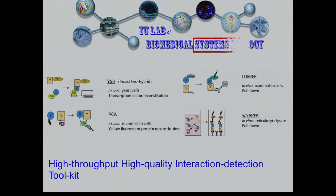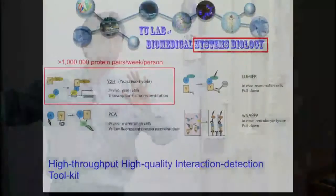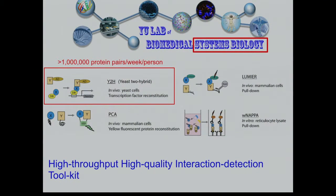My lab is a systems biology lab, although I'm in the biostatistics department at Cornell. We do experiments, and our primary screening method is Y2H. I know different people have different opinions on Y2H, so I want to talk a little about it. Y2H is a really huge scale — we can do one million protein pairs screened per person per week — a scale that no other method comes even close to.